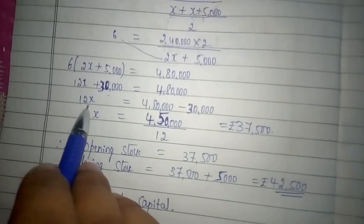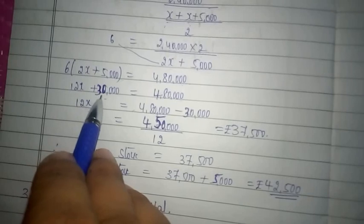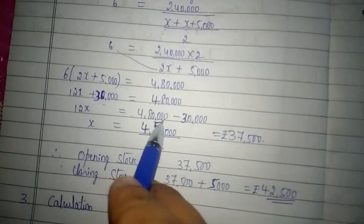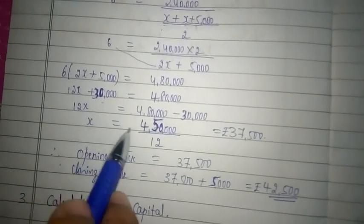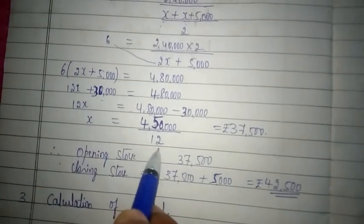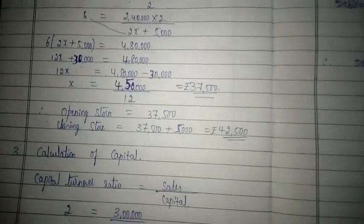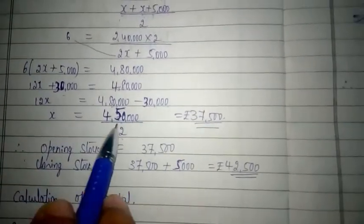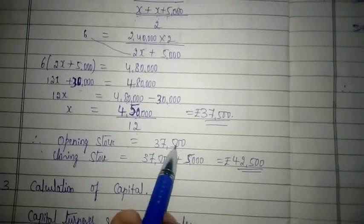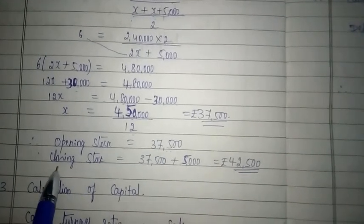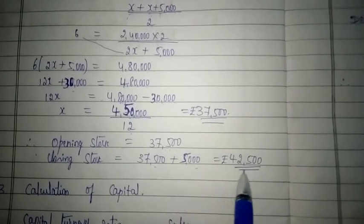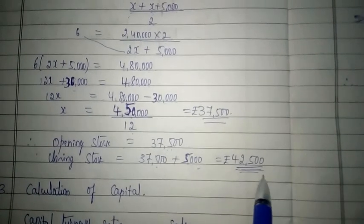Bringing constants to one side: 12x = 4,80,000 − 30,000 = 4,50,000. Therefore x = 4,50,000 ÷ 12 = 37,500. Since x represents opening stock, opening stock = rupees 37,500. Closing stock = 37,500 + 5,000 = rupees 42,500.